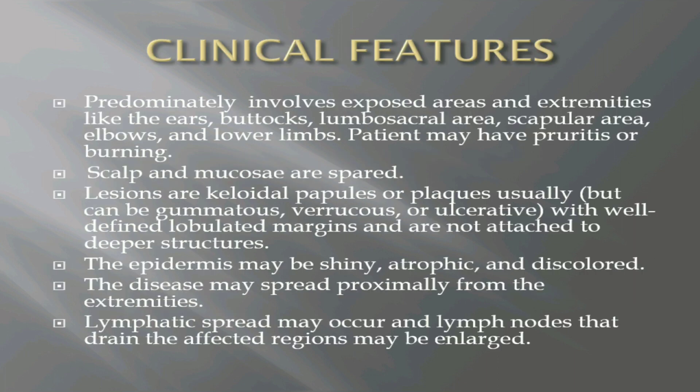What are the clinical features of this condition? It predominantly involves exposed areas and extremities like the ears, ankles, buttocks, lumbosacral area, scapular area, elbows, and lower limbs. Patients may complain of pruritus or burning. Scalp and mucosae are spared. The lesions are typically keloidal papules or plaques, but they can be gummatous, verrucous, or ulcerative with well-defined lobulated margins which are not attached to the deeper structures.